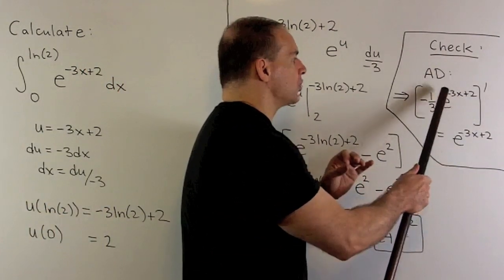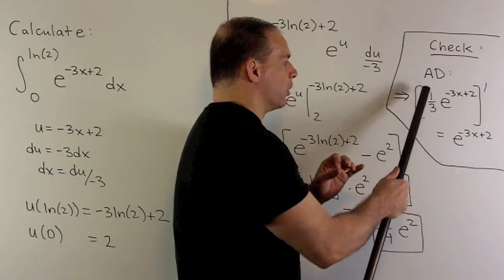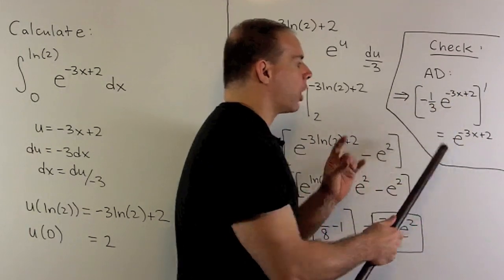So the derivative here is going to be minus 3. It's going to take out our minus 1 third. And then we're left with our integrand.